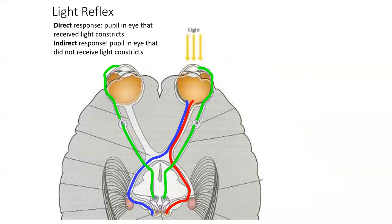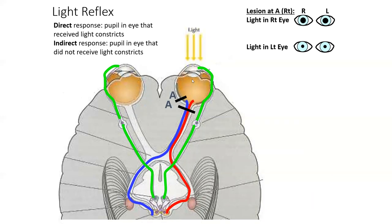So what happens if there's a lesion somewhere in this pathway? If the stimulus comes in the right eye and the lesion is at the right eye, the information never has a chance to make it back to synapse and create a response. However, because of that consensual response, even if a person had a lesion there, shining a light in the left eye would leave the pathway unimpeded, and you would see normal constriction of both pupils.